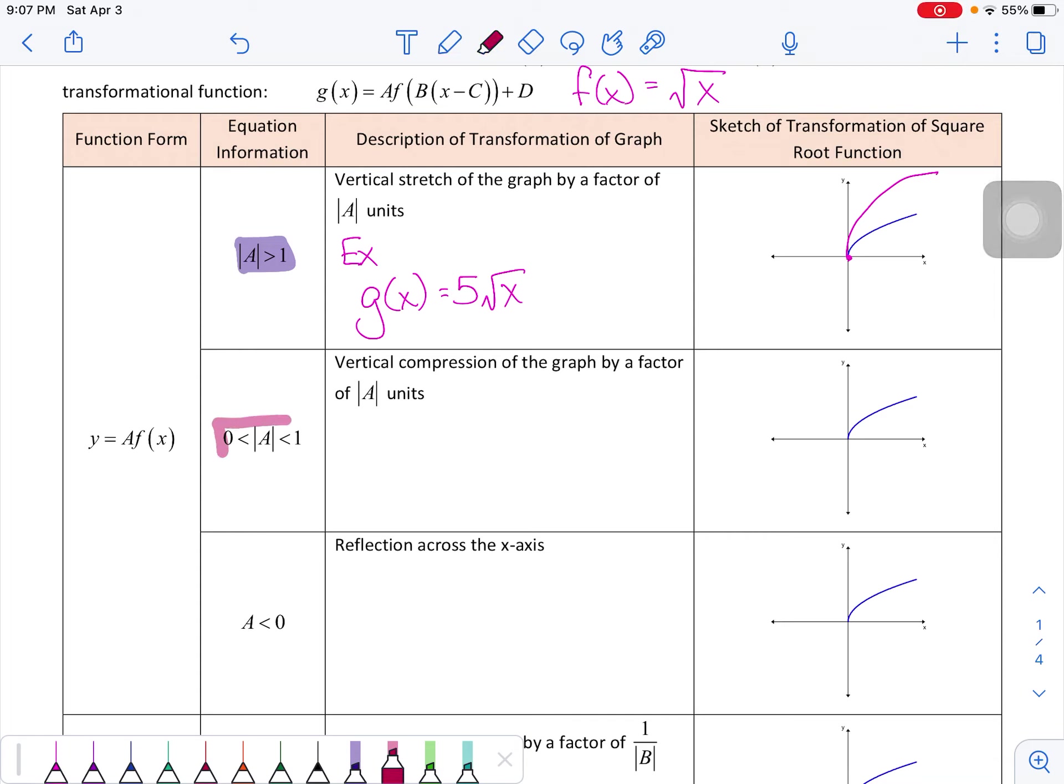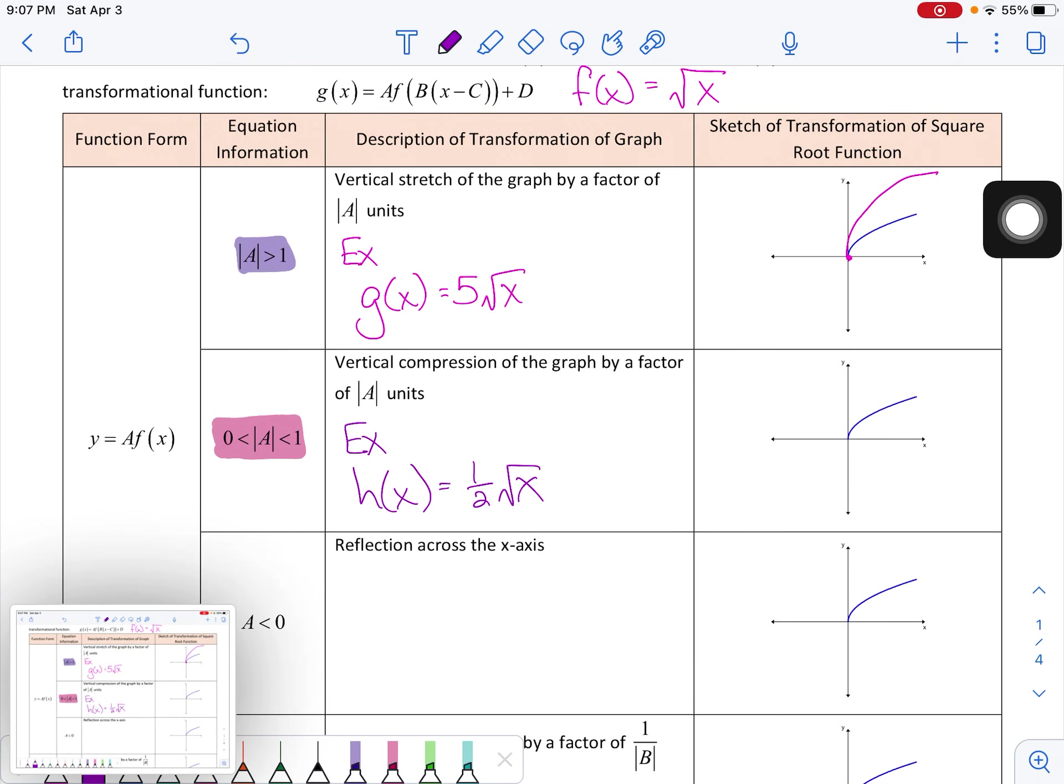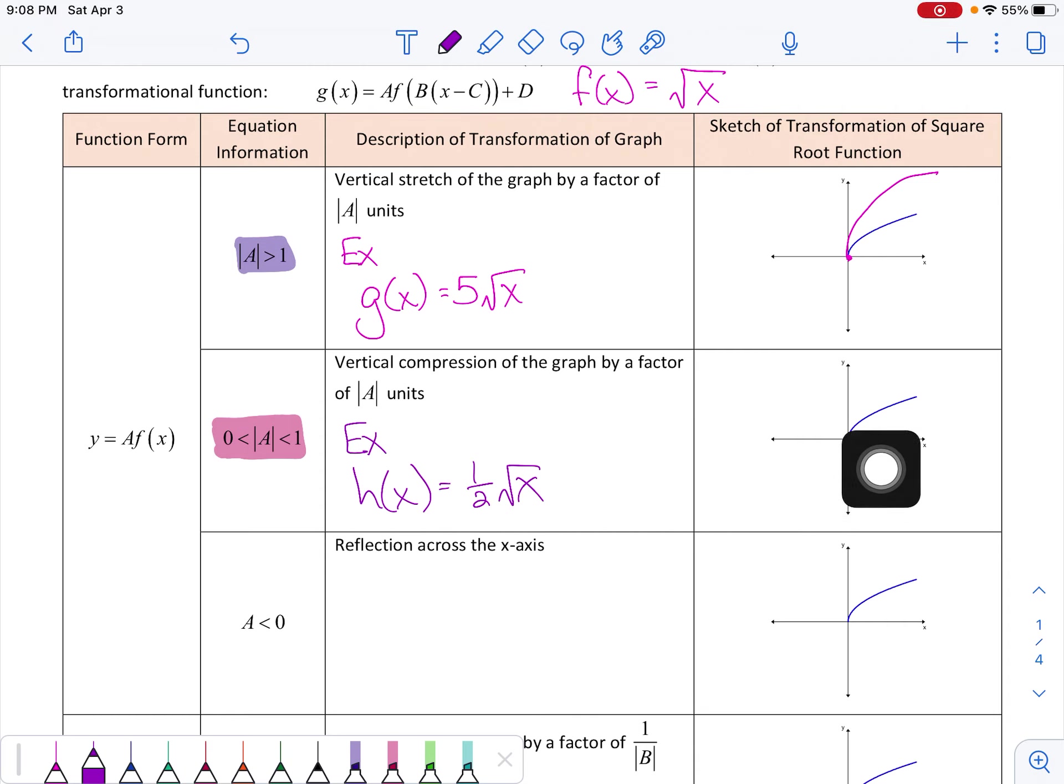Let's say that a is between 0 and 1. So think of decimals between 0 and 1, fractions between 0 and 1. Let's say for example we do h of x is equal to 1 half the square root of x. That 1 half is going to take all of these points on the curve and compress them closer to the x-axis. In fact, it's going to be half the distance to the x-axis. So between the blue curve and the x-axis, we're halfway between there.